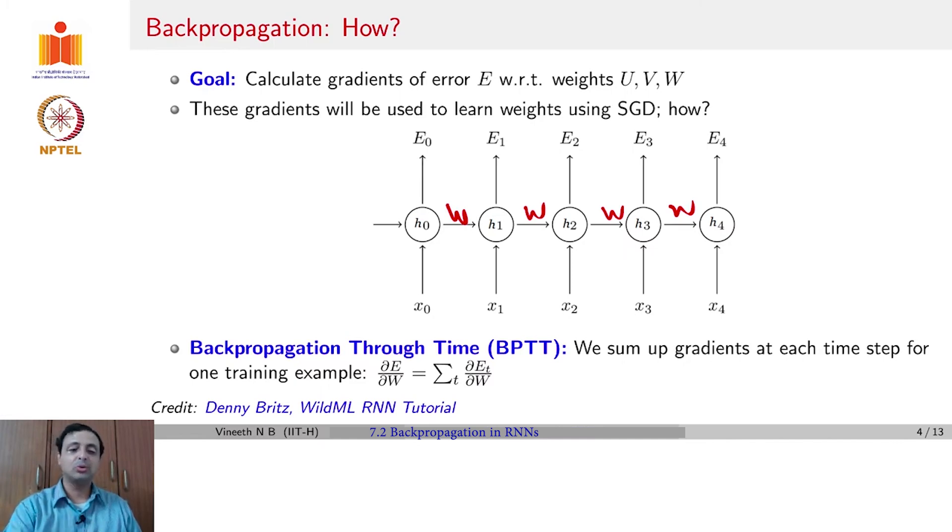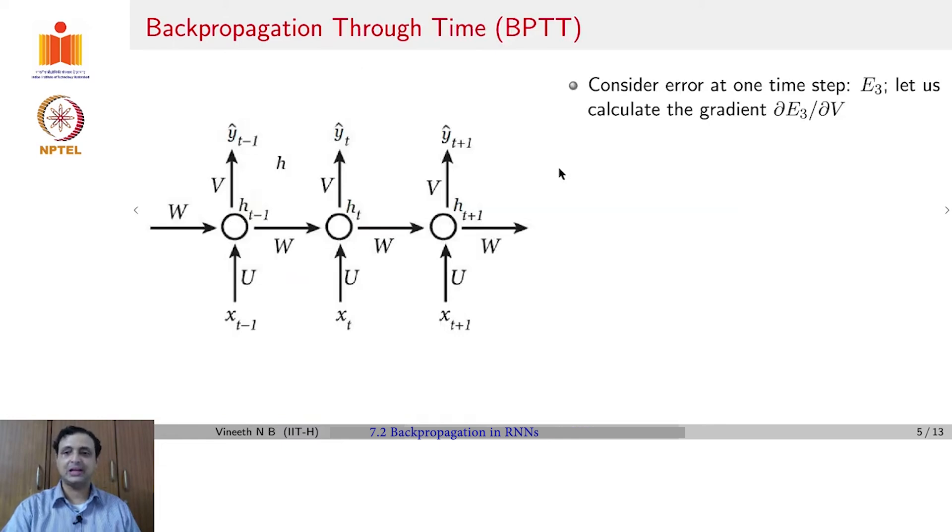If we had to compute ∂E/∂W, where E is the overall error, ∂E/∂W would be given by summation over t, ∂E_t/∂W, where E_t is the error at each time step. Our next question boils down to how do you compute each of these ∂E_t/∂W? Let us see that now.